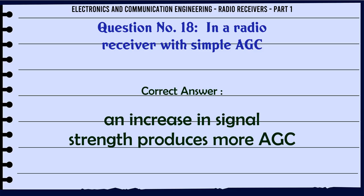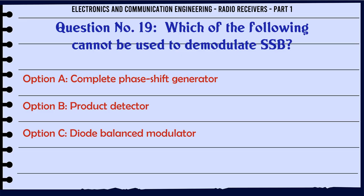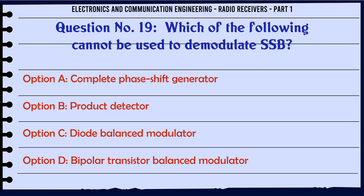Which of the following cannot be used to demodulate SSB? a. Complete phase shift generator. b. Product detector. c. Diode balanced modulator. d. Bipolar transistor balanced modulator.